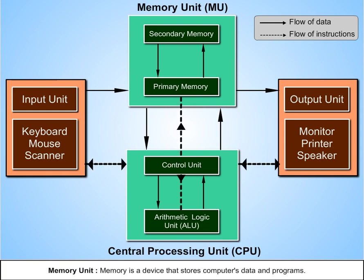Memory Unit. Memory is a device that stores computer's data and programs. The two types of memory are Primary Memory, that is internal, and Secondary Memory, that is external.